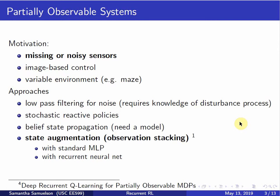Some motivation for this: reinforcement learning deals with the problem of trying to learn in real time or on a real-world system an optimal control policy when we may not know the model. Since we're dealing with real-world systems, oftentimes we don't only not know the model — we also may not have full access to the state.